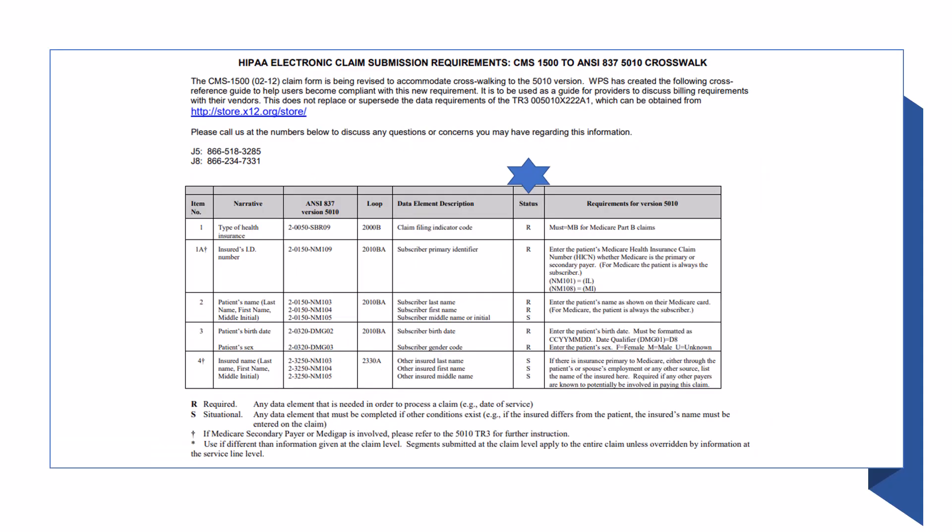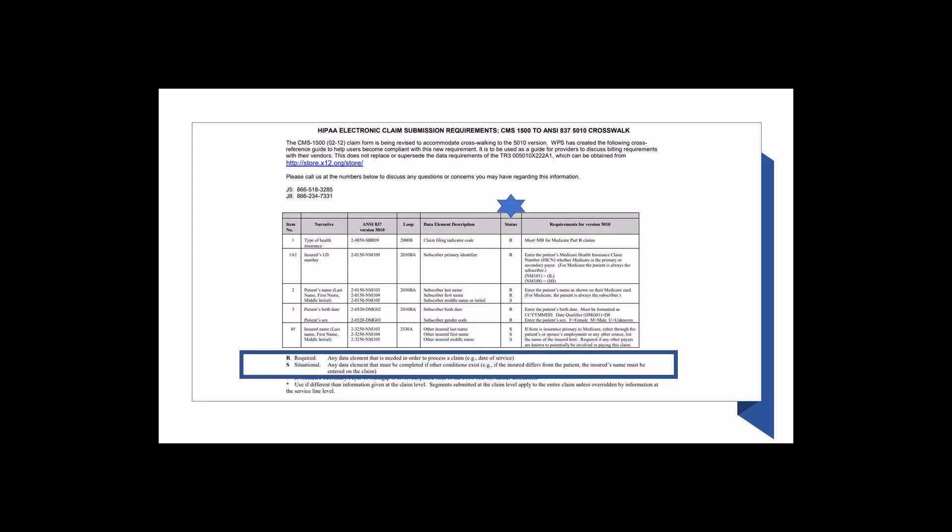The next column, labeled Status, includes an R or an S. R stands for required and is used for any data element that is needed to process a claim — the date of service is a good example. If an S appears in the Status column, it means any data element that must be completed if other conditions exist. In other words, the information is situational.